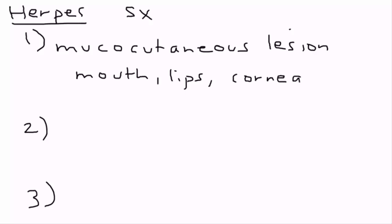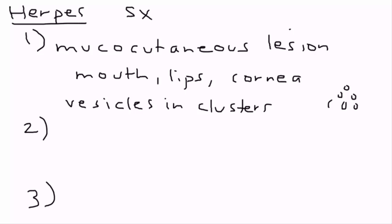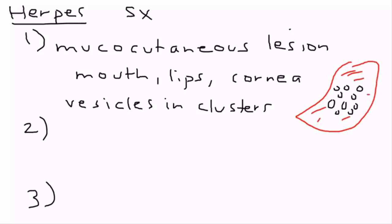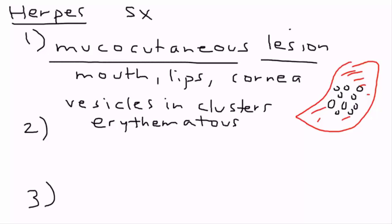Mucocutaneous lesions commonly occur on the mouth, the lips, the conjunctiva, or the cornea. The characteristic feature is vesicles in clusters of different sizes, sitting on an erythematous (red) base. It's worth looking up pictures of herpes mucocutaneous lesions to get a clear idea of what this looks like.